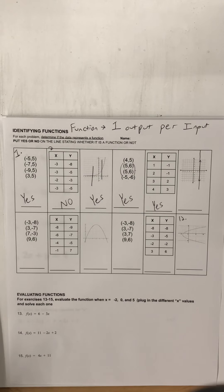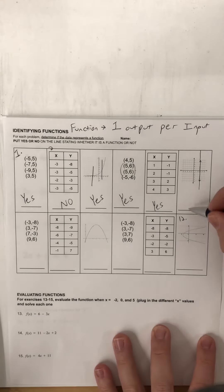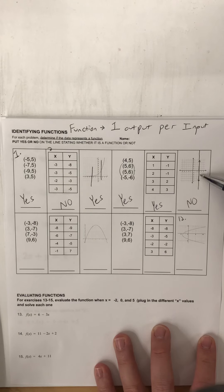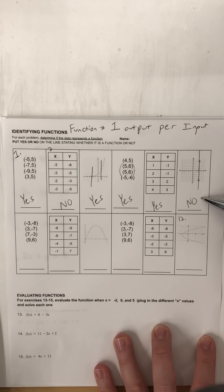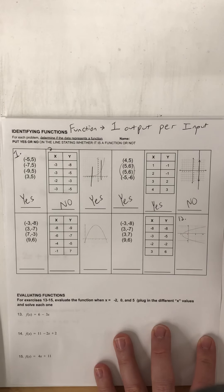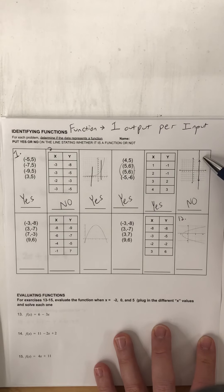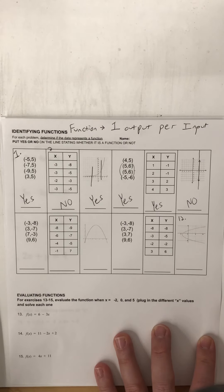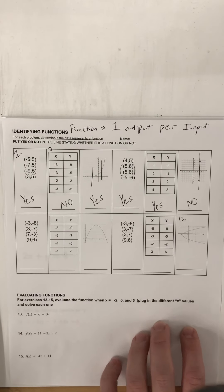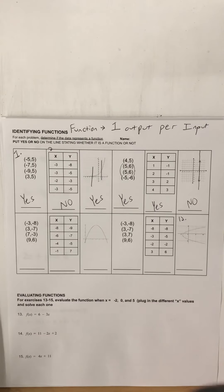Christopher said we do not have a function, and that is correct. If we do the vertical line test on a vertical line, there is an infinite amount of points that it crosses. There is an infinite amount of points of intersection if a vertical line crosses a vertical line — so that's why a vertical line is never a function.